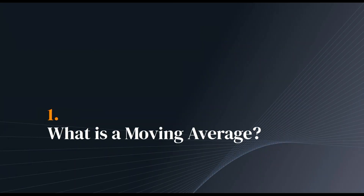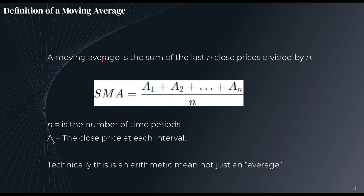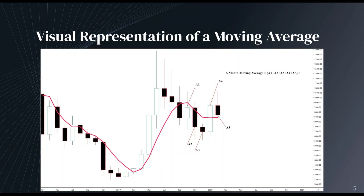Let's start with what a moving average actually is. Here we have the formula for a moving average. A moving average is the sum of the last N close prices divided by N. Simple moving average: all the close prices added up divided by N. N is the number of time periods. So if we have a 6 moving average, we have A1 through A6. Technically, this isn't just an average — it's an arithmetic mean, because an average could be multiple different things. That's going to be important once we start talking about the significance of it being an arithmetic mean.